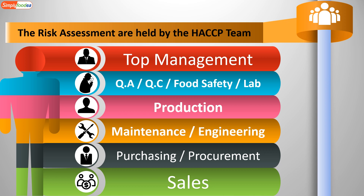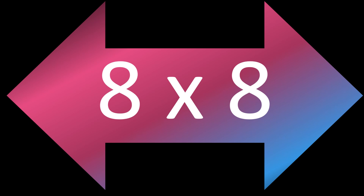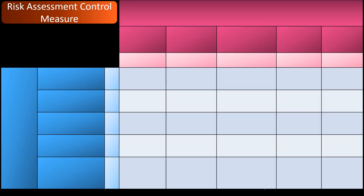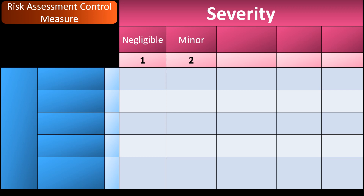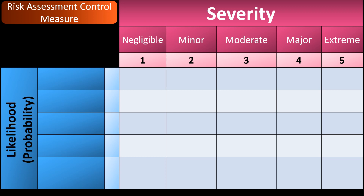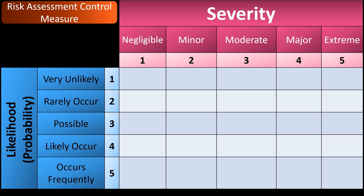All these HACCP team members hold the risk assessment. To make a risk assessment, you draw an 8×8 table — eight columns by eight rows — as a risk assessment control measure matrix. Risk equals severity multiplied by probability or likelihood. For severity levels: negligible = 1, minor = 2, moderate = 3, major = 4, extreme = 5. For likelihood levels: very unlikely = 1, rarely occurs = 2, possible = 3, likely to occur = 4, occurs frequently = 5.